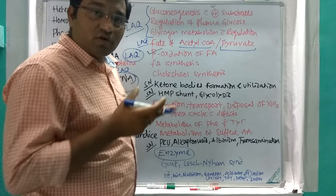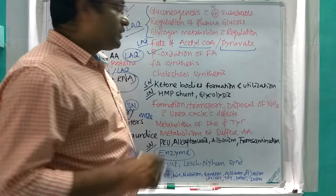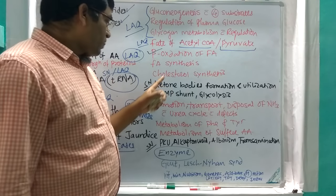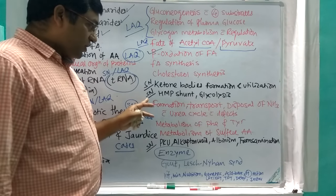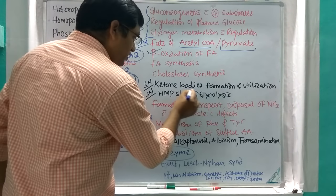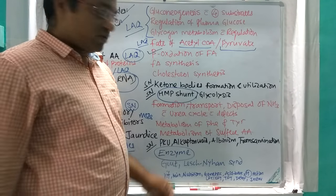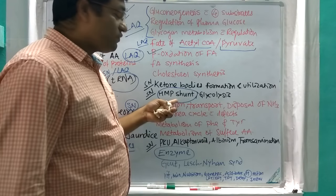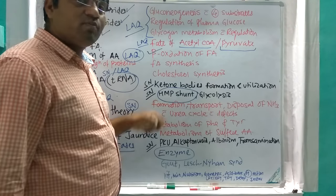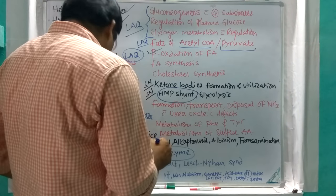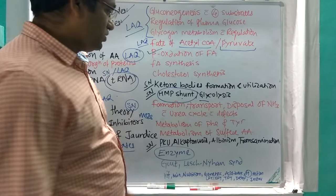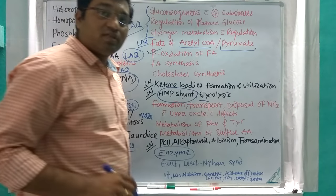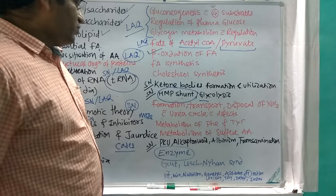In lipid metabolism, read beta oxidation of fatty acids along with related disorders, fatty acid synthesis, and cholesterol synthesis as LAQs and short notes. The HMP shunt is a very important short answer question because it generates NADPH and pentose sugars. Also important short notes: glycolysis in carbohydrate metabolism, and ketone body formation, their utilization, and starvation.